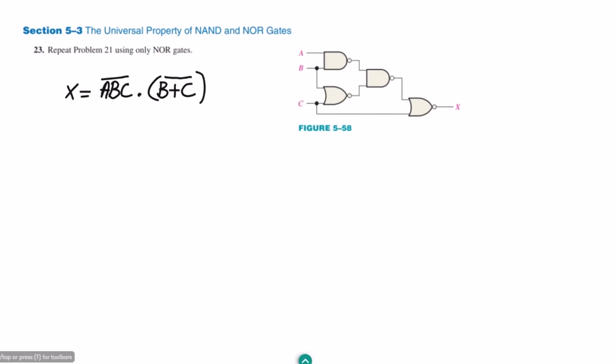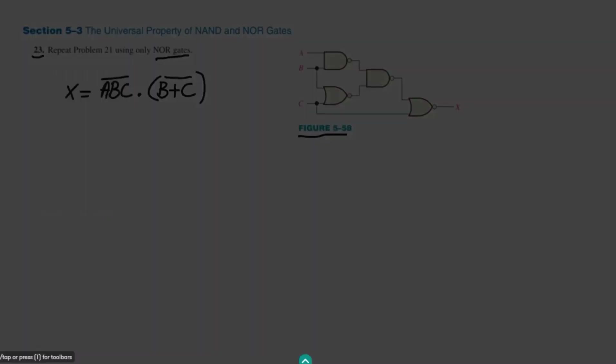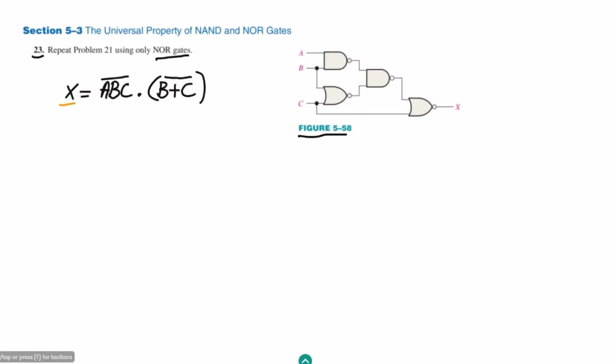Welcome back guys. In the previous question we have seen the implementation of figure 5.58 using NAND gates. This is question 23 and we have to repeat the same problem using only NOR gates. Previously we have seen that the logic expression for the circuit is x = (abc)' · (b+c)'.